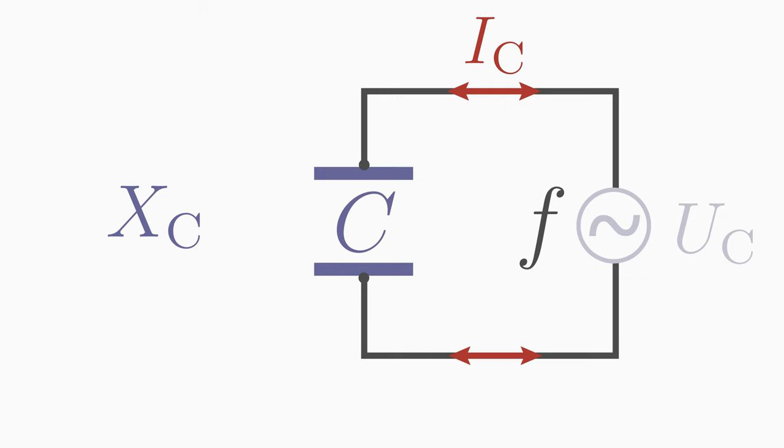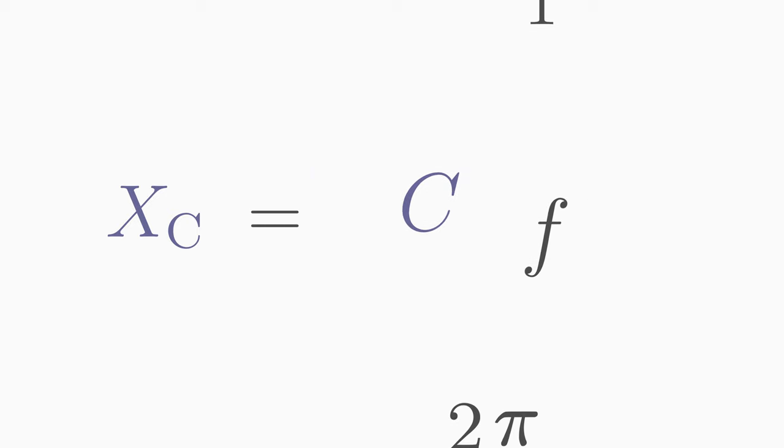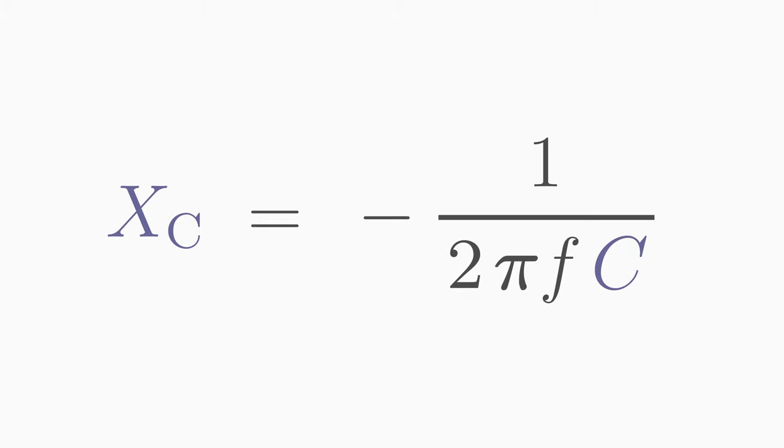You can easily calculate the capacitive reactance. You need the AC voltage frequency F and the capacitance C. X_C is equal to minus 1 over 2 times pi times F times C. Pi has the value of 3.14.